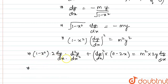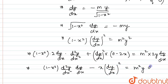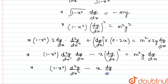Dividing throughout by 2 gives: (1 minus x²)·(d²y/dx²)·(dy/dx) minus x·(dy/dx)² equals m²·y·(dy/dx). Then dividing both sides by dy/dx, we get 1 minus x² times d²y/dx² minus x times dy/dx equals m² times y.